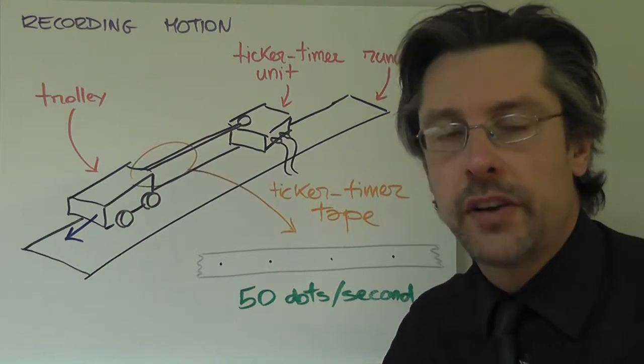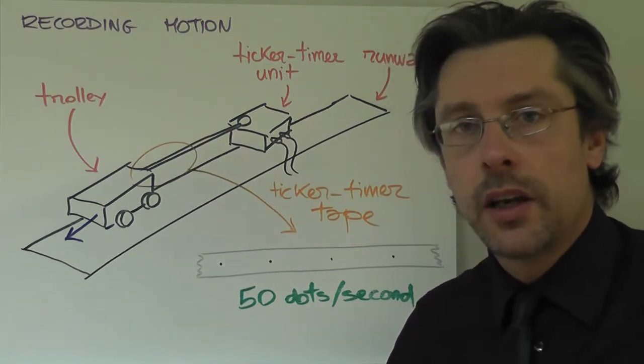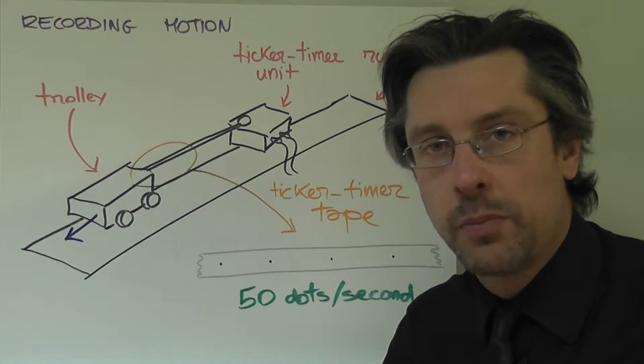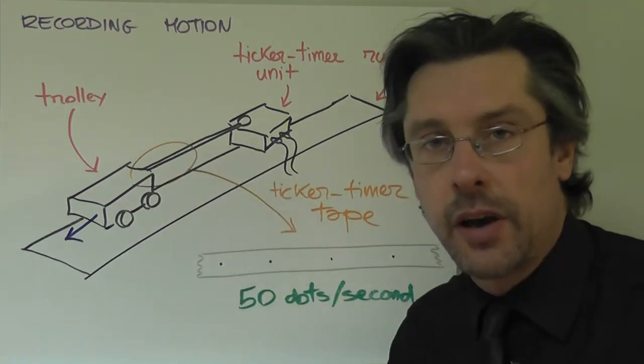You know already that in order to find the speed of an object you have to measure the distance traveled divided by the time taken. Here we're going to do something a bit more complex and we're going to use this kind of apparatus.